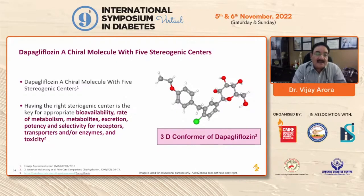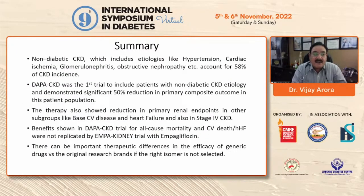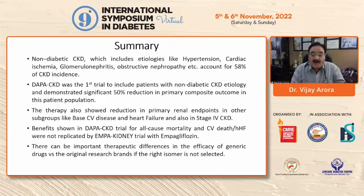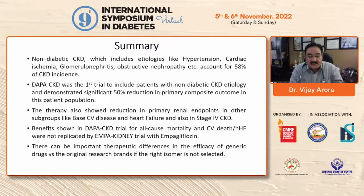In summary: non-diabetic CKD — including etiologies like hypertension, renal ischemia, glomerulonephritis, and nephropathy — accounts for 58% of CKD incidence. DAPA-CKD was the first trial to include patients with non-diabetic CKD etiology and demonstrated a significant 50% reduction in the primary composite endpoint in this population. The therapy also showed reduction in primary renal endpoints in subgroups including baseline CVD, heart failure, and stage 4 CKD. Benefits shown in DAPA-CKD for all-cause mortality, CV death, and heart failure were not fully replicated by the EMPA-Kidney trial with empagliflozin. There can be important therapeutic differences in the efficacy of a generic drug versus the original if the right isomer is not selected.